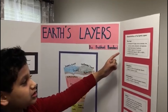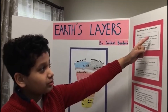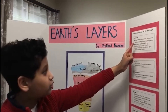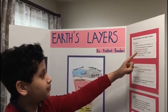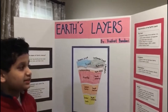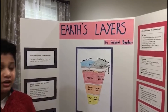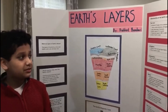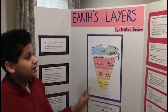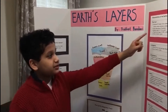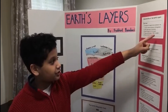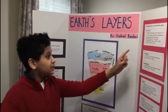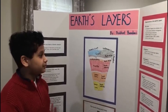The crust is composed of oxygen, silicon, aluminum, iron, calcium, sodium, and magnesium. The density range of the crust is 2.7 to 3.3 grams per centimeters cubed. Its temperature range is negative 100 degrees Celsius to 400 degrees Fahrenheit, and its state of matter is solid.